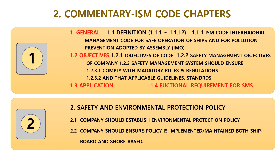Section 2: Commentary ISM code chapters. Chapter 1: General. 1.1 Definition — 1.1.1 to 1.1.12 are the definitions. Among them, 1.1.1 is the definition of ISM code itself. ISM code means the International Management Code for safe operation of ships and for pollution prevention, adopted by the IMO Assembly. 1.2 Objectives of the code. 1.2 Safety management objectives of the company. 1.2 Safety management system should ensure. 1.2.3.1: Comply with mandatory rules and regulations. 1.2.3.2: That applicable guidelines and standards. 1.3: Application. 1.4: Functional requirements for SMS.